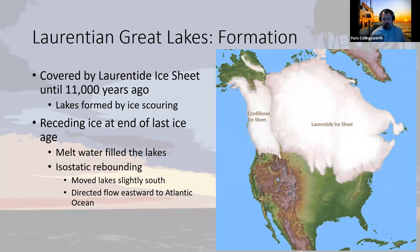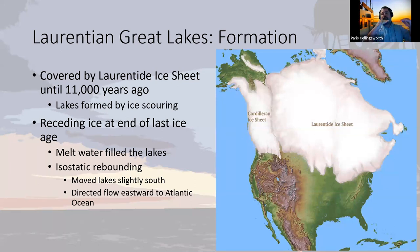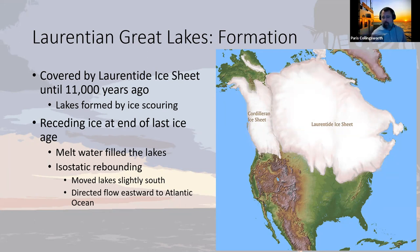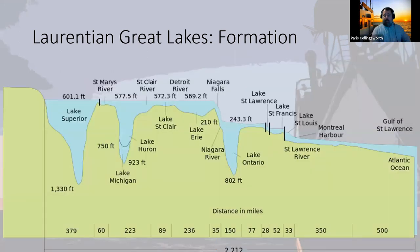The lakes formed as the ice sheet receded at the end of the last ice age, and meltwater filled them. As this heavy ice sheet melted, there's also a process called isostatic rebounding — when the land was compressed so much by the weight of the ice, it is still rising in response. This rebounding helped the lakes take their final form and actually directed the flow of the Great Lakes to now go out to the Atlantic Ocean. Essentially, it's a big river system.